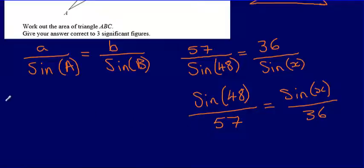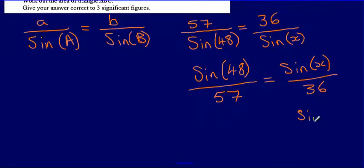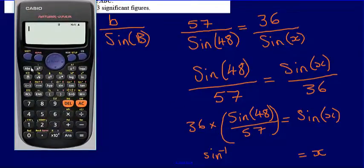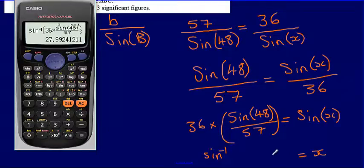Then solving this, what I can then say is that sine x will be equal to 36 multiplied by sine 48 divided by 57. And then to figure out what x is going to be, well, I'm just going to have to do the inverse of sine. So I'm going to say that that is sine to the minus one of this quantity here, 36 times sine 48 over 57. So if I now type this into my calculator, I'm saying that this is the inverse of sine. And then it's 36 multiplied by sine 48 divided by 57. So that is going to give me an answer of 27.9. So x is equal to 27.99.